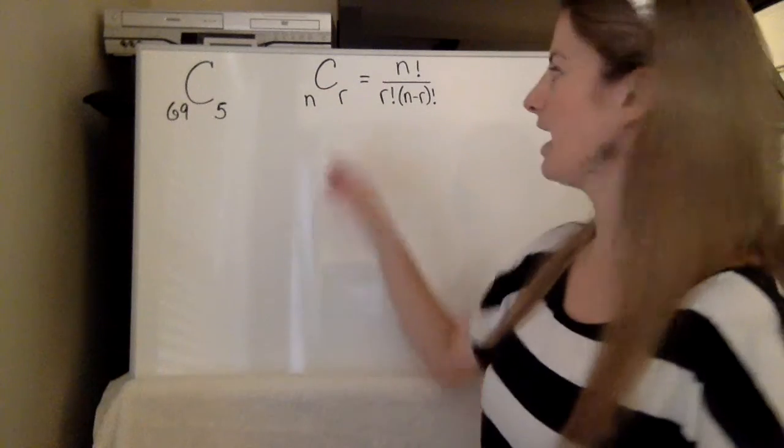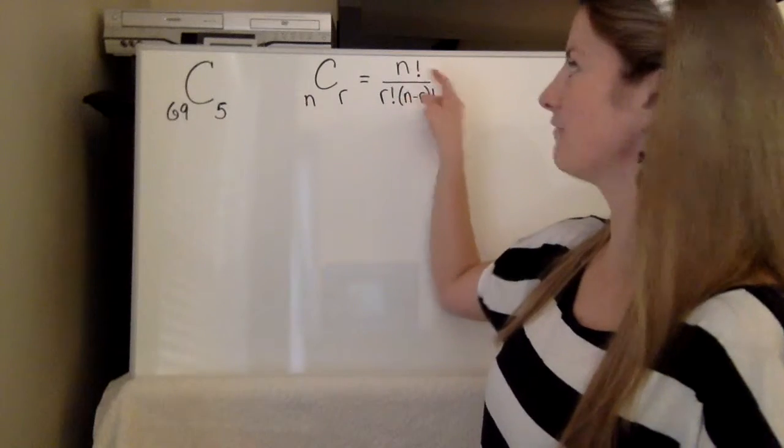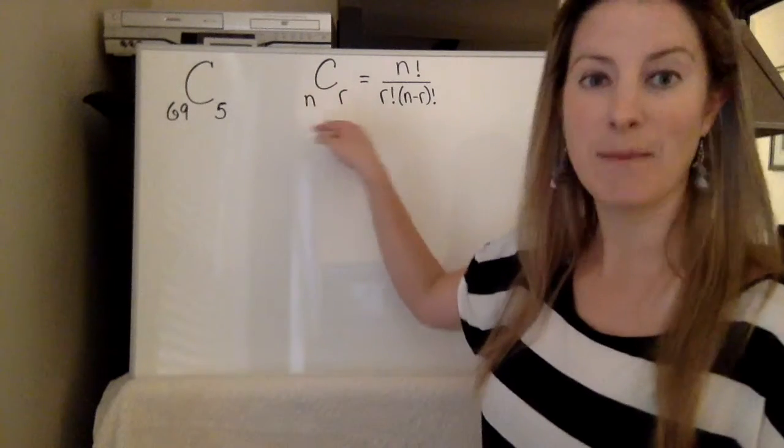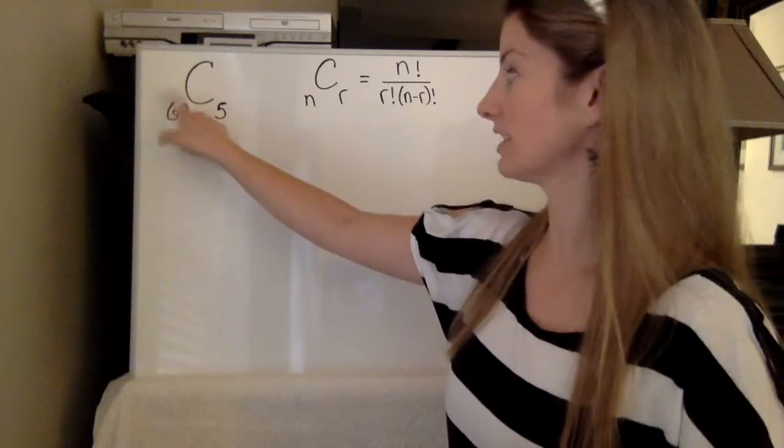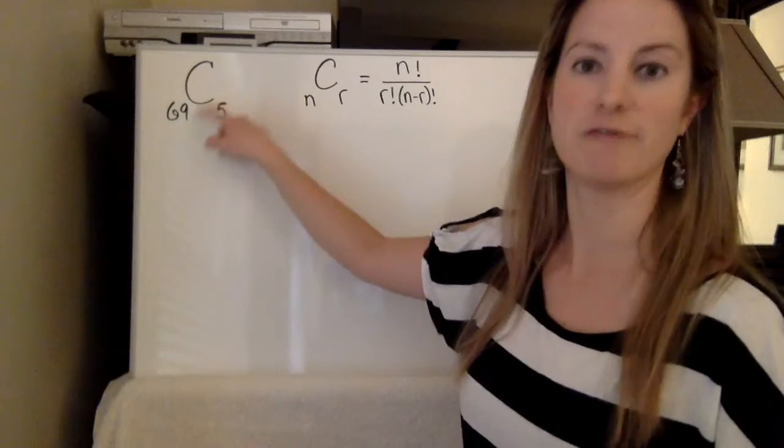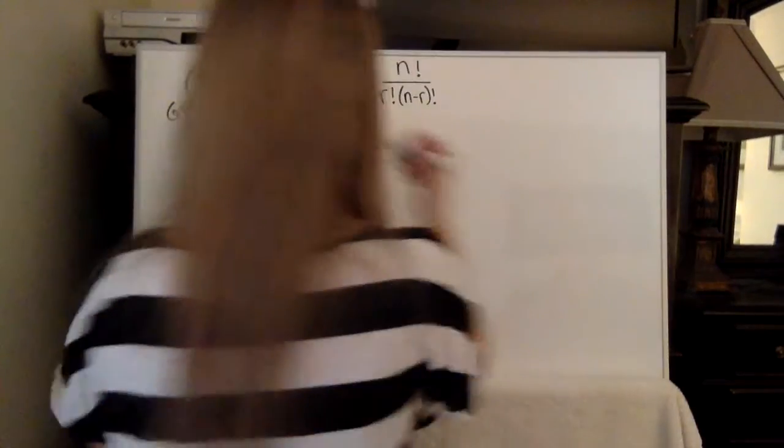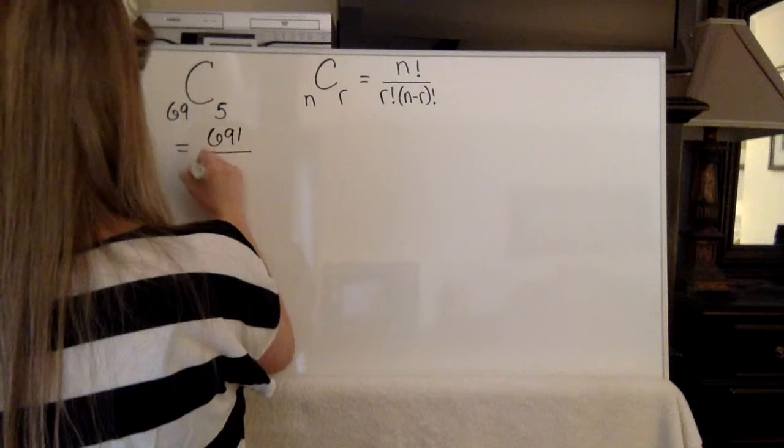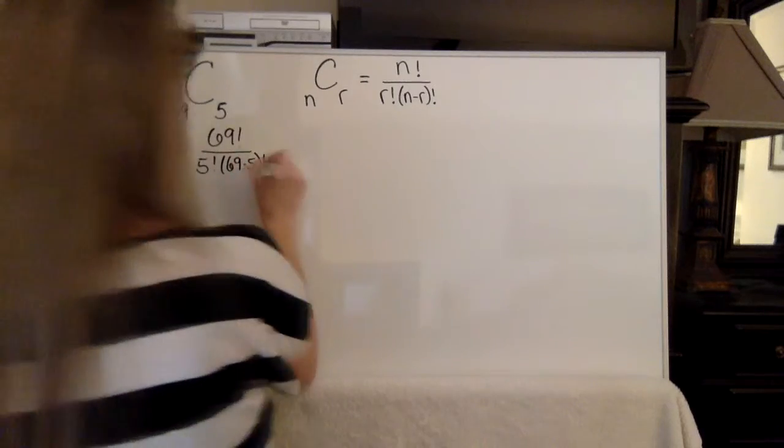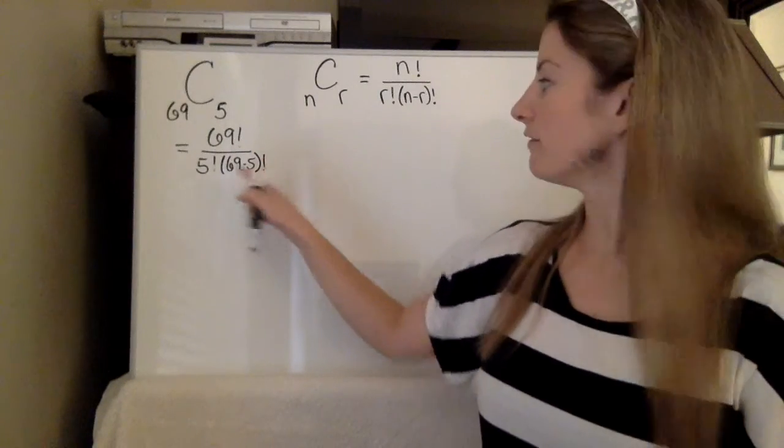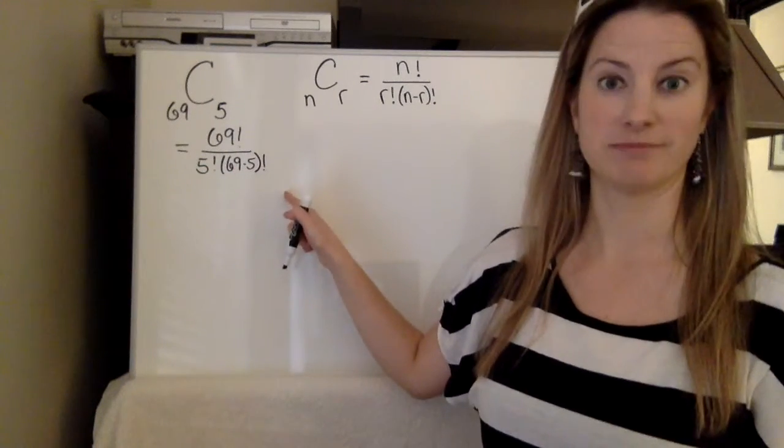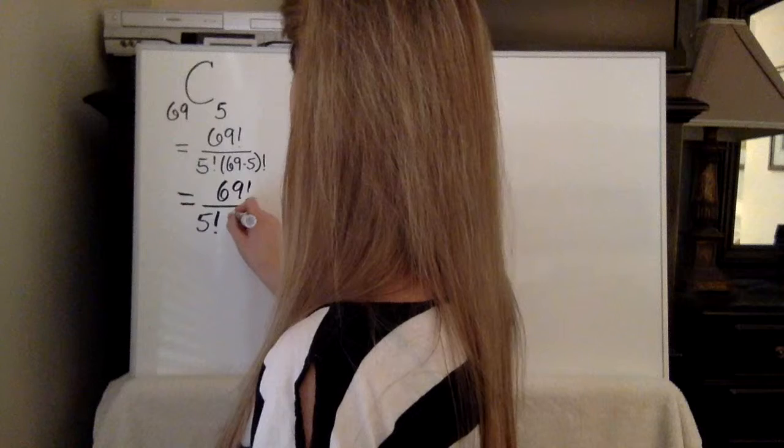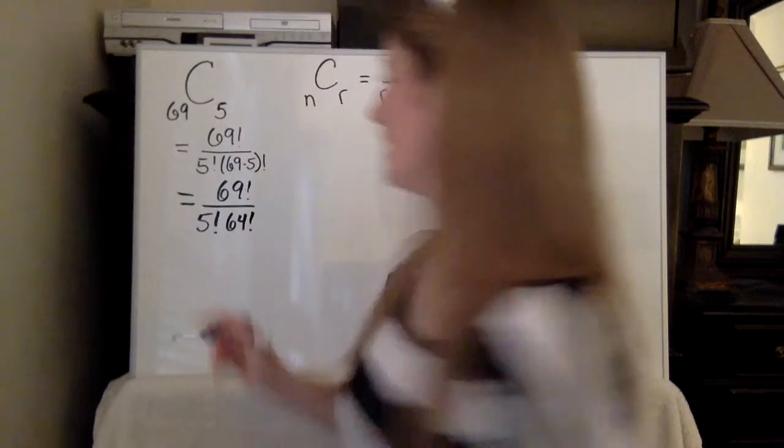So when we have something like 69 choose 5, you might remember the formula for combinations. It's n choose r and basically it's n factorial divided by r factorial times n minus r factorial. So n is the number of objects you're choosing from. In this case there's 69 numbers we could possibly pick and we're picking 5. So if we kind of filled this out, it would just be for this one 69 factorial over 5 factorial times 69 minus 5 factorial.